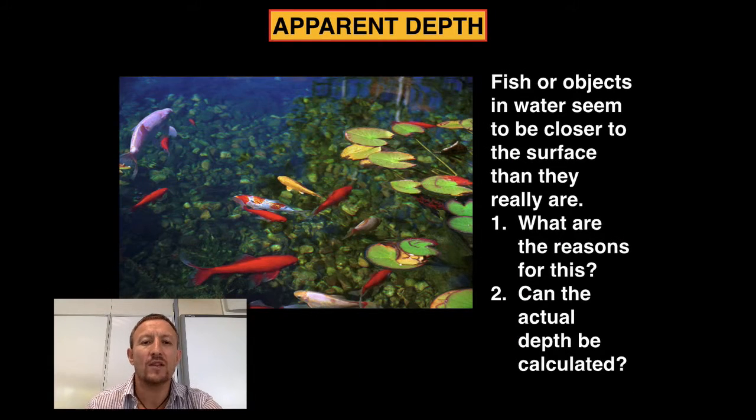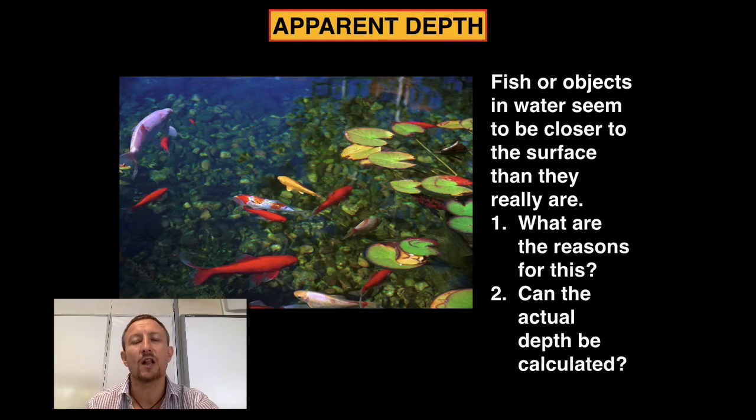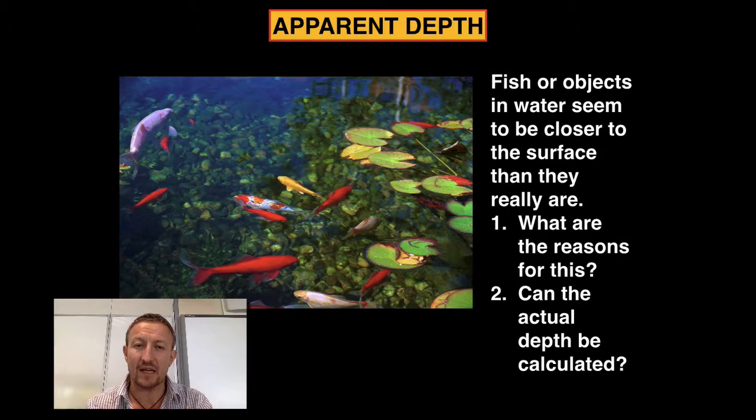Have you ever wondered that when you look into a fish pond and you look at the fish swimming around or the stones at the bottom, they always seem to be a lot closer to you than they really are? If you tried to grab a fish you'd actually miss it, firstly because the fish would swim away and secondly because your perception of where the fish actually is versus where it really is - there is a difference.